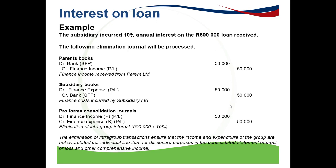For every loan, remember there is an interest income and also a finance expense. The $50,000, which is the annual interest on the $500,000 loan, will in the elimination consolidated journal result in a debit to finance income — eliminating the income previously recognized in the parent's books — and a credit to finance expense, which is also eliminated. The elimination of intergroup transactions ensures that income, which is the parent's income, and expense, which is the subsidiary's expense, are not overstated per individual line item for disclosure purposes in the consolidated statement of profit or loss and other comprehensive income.